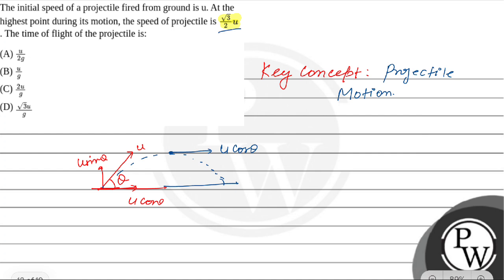The u cancels out, so we get cos θ = √3/2. From this we can find θ = 30°. Now we have found theta, and the question asks for time of flight.